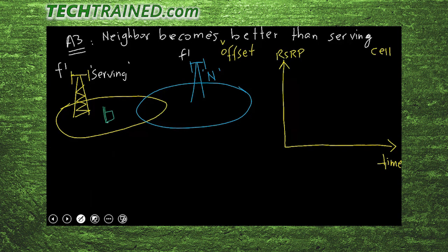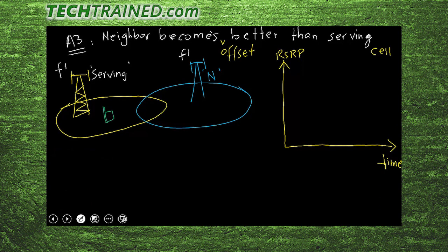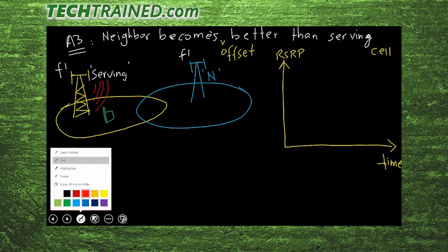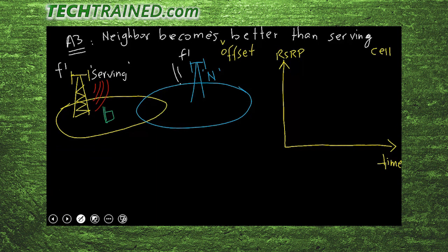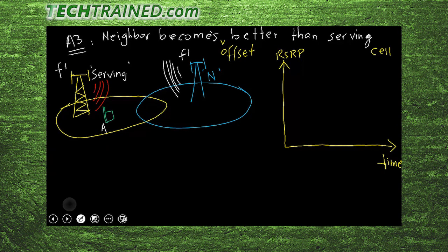Let's say the user is standing on the serving cell. The coverage of the serving cell I will represent in red color and the coverage of the neighboring cell in white color. When the user is standing at position A, the coverage of the serving cell will look something like what I've drawn in green on the right side.